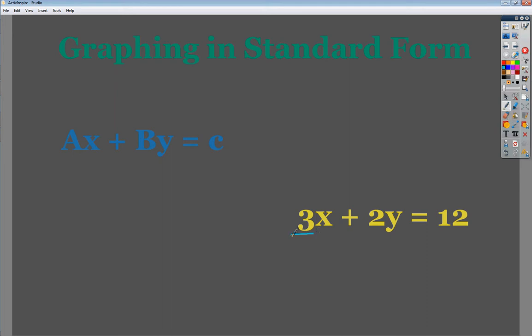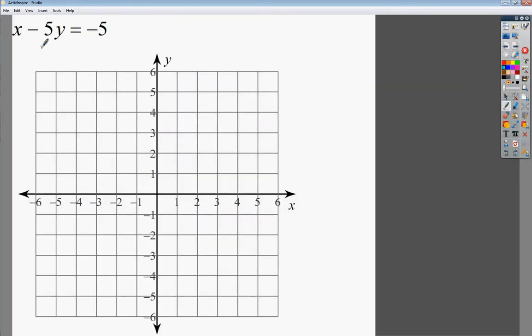This is a perfect example: 3x plus 2y equals 12. This is standard form. The nice thing about standard form is if you hand graph stuff, it's really easy to do in almost every situation. So what we're going to do is what's called intercepts method. If you have it in standard form, you can find the relationship that the numbers have with the axis.